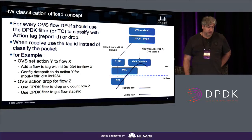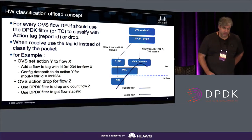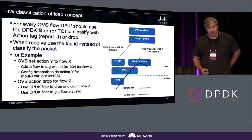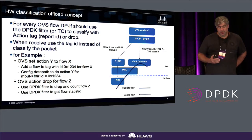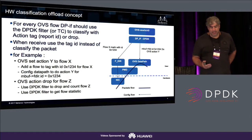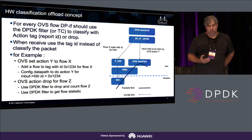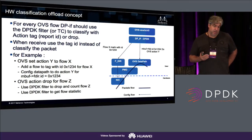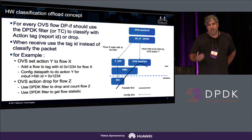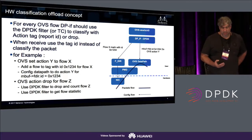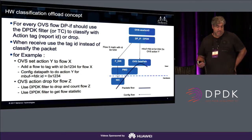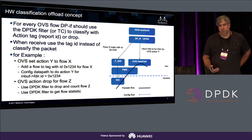We start with the low-hanging fruit: classification offload. The idea is you take OVS and all the mega flows in the data path. For every rule in the data path, you create a rule in the hardware to classify and give you a flow ID or a hint. Or if a packet is supposed to be dropped, the action will be to drop it in hardware.